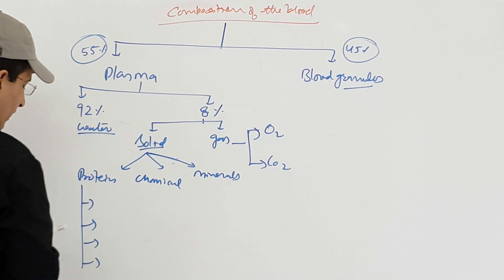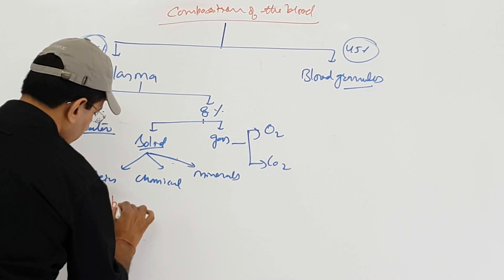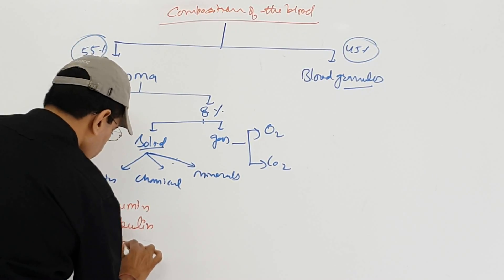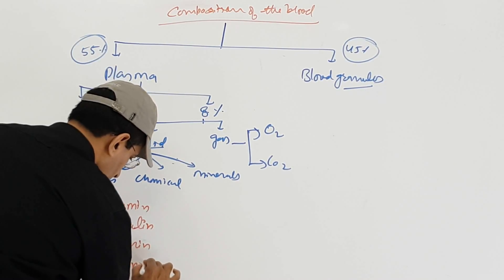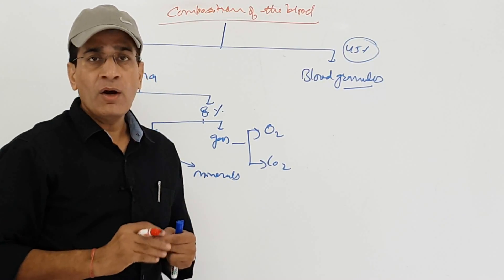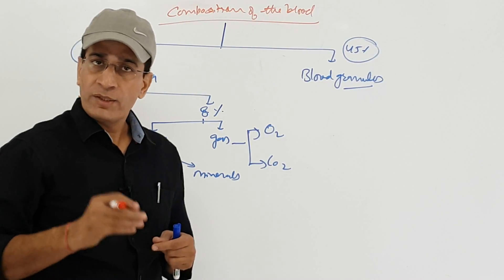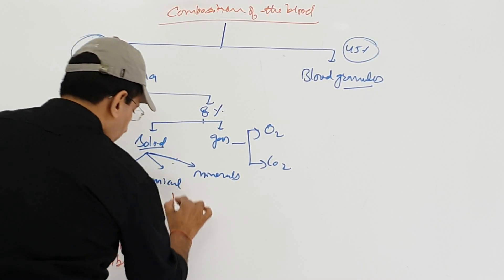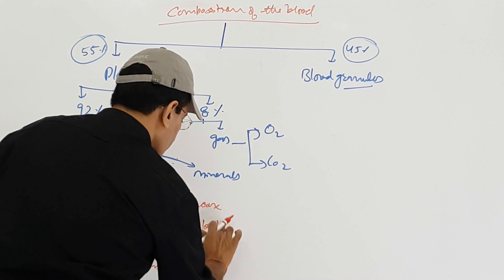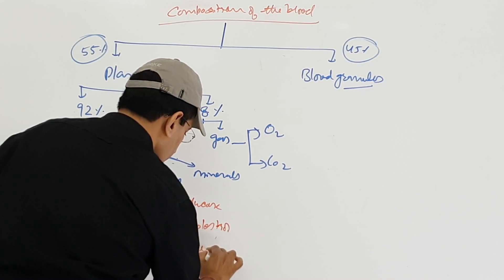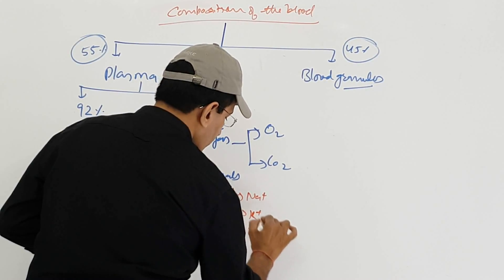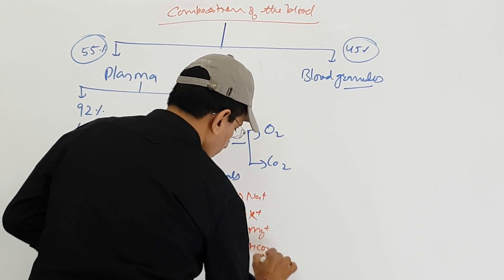Four proteins are basically present in abundance in the blood: albumin, globulin, heparin, and fibrinogen. Albumin and globulin are the proteins that are the feeding material for female mosquitoes in blood, which is why female mosquitoes bite human beings. The chemical components include glucose, cholesterol, and urea, and minerals include sodium, potassium, magnesium, bicarbonates, and chloride etc.